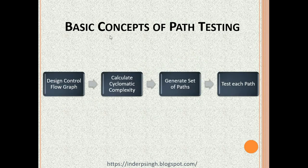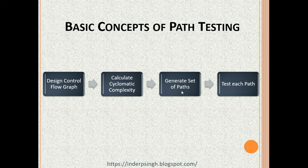Let us revisit the path testing process. First, design the control flow graph. Then calculate the cyclomatic complexity metric, which is E minus N plus 2, where E is the number of edges and N is the number of nodes. In our triangle problem example, we got a cyclomatic complexity of 4. Then we generate the set of paths — there were 4 paths in our triangle problem — and the final step is to test each path. This completes my basis path testing example. I hope you now know the basic concepts of path testing. Please view my other test design tutorials also.